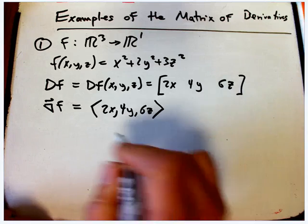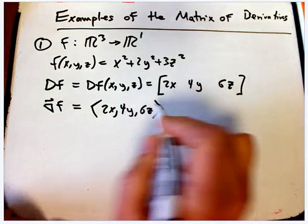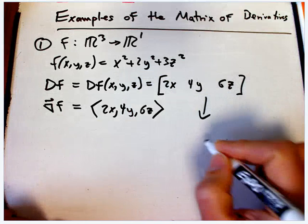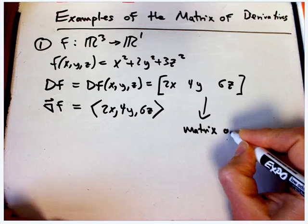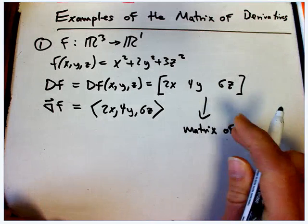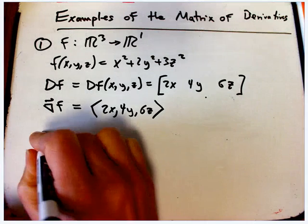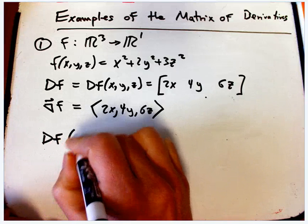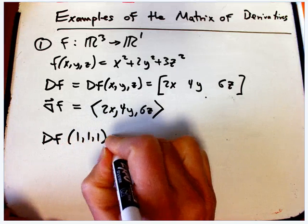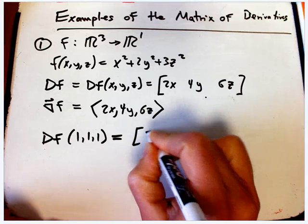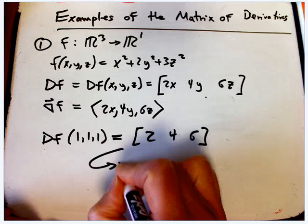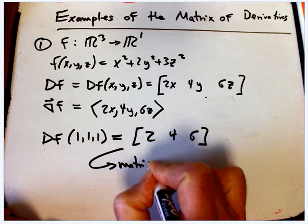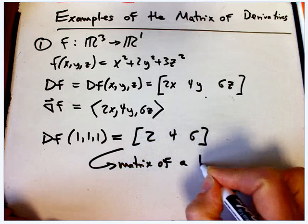But one nice thing to note is that this matrix, if you evaluate it at any particular point, let's say, let's be really explicit. Let's say df at (1,1,1), just to be fun, is [2 4 6].